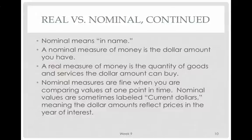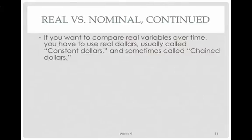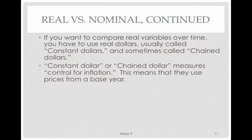Nominal measures are fine when you are comparing values at one point in time. Nominal values are sometimes labeled 'current dollars,' meaning the dollar amounts reflect prices in the year of interest. For example, the 2012 GDP figures for China and the United States we looked at earlier were current measures. But if you want to compare real variables over time, you have to use real dollars, labeled as 'constant dollars' or sometimes 'chain dollars.' Constant or chain dollar measures control for inflation by using prices from a base year, so dollar amounts increase only because the underlying goods and services increased, not because prices increased.